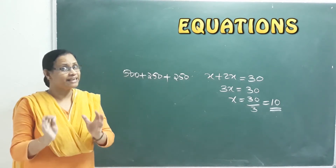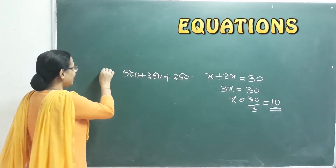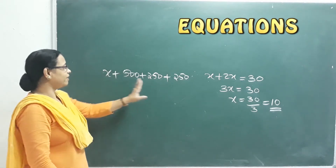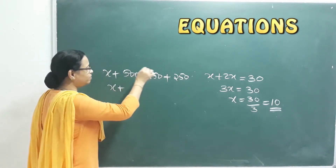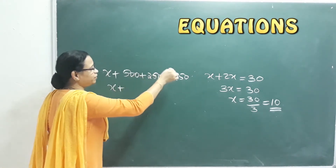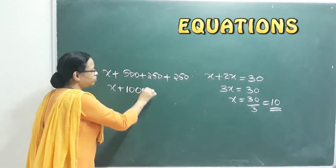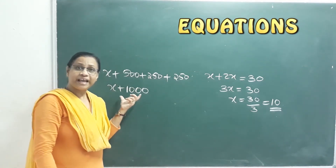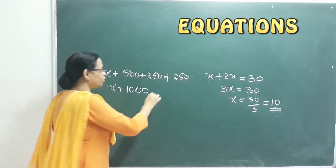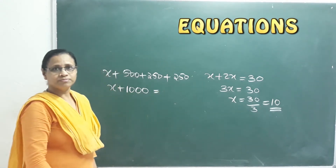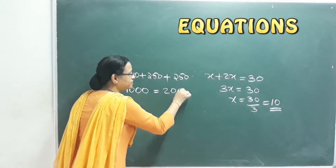If you go to the next standard, there are a little 100. So this is how we write: x plus 500 is 750. This is the expression.